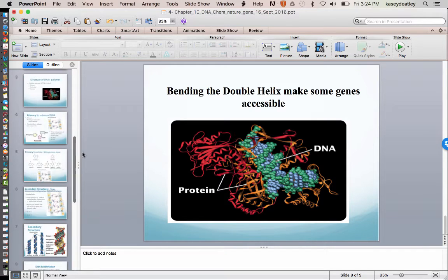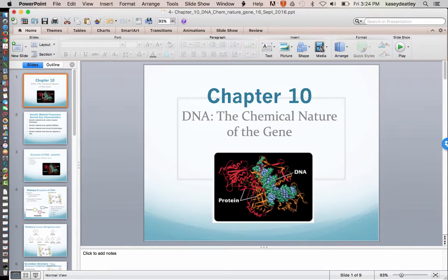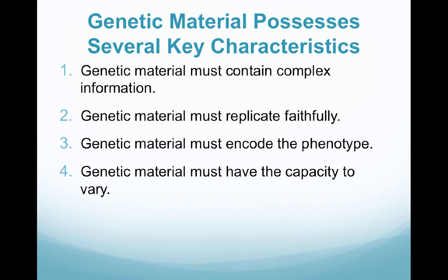Hi guys, since you have now been through chapter 8 where we've talked about chromosomal variation, we're going to jump right into chapter 10 which is talking about the chemical nature of the gene. So we're going to be spending a lot of time talking about the different components that make up DNA.